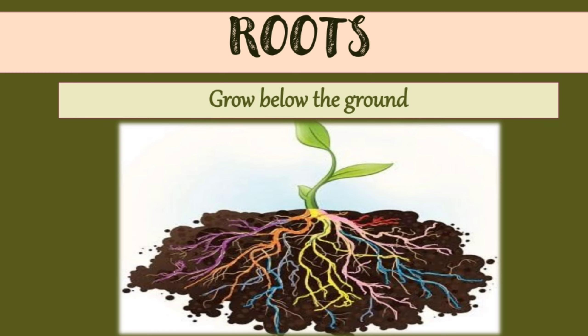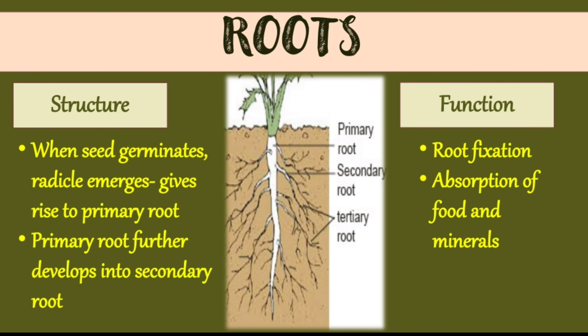Next one is roots. Roots grow below the ground. When a seed germinates, as we have seen in the germination process, the radicle emerges and gives rise to the primary root — you can see the tapering white part in the figure. This primary root further develops into secondary roots, and then tertiary roots also develop.